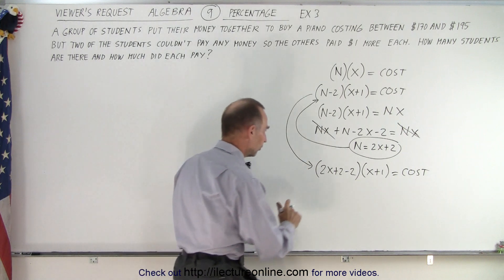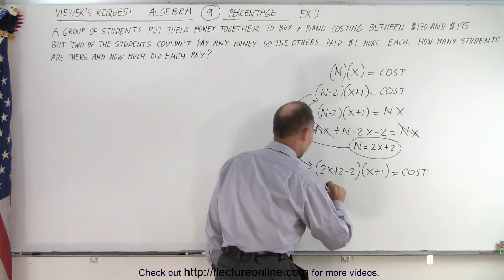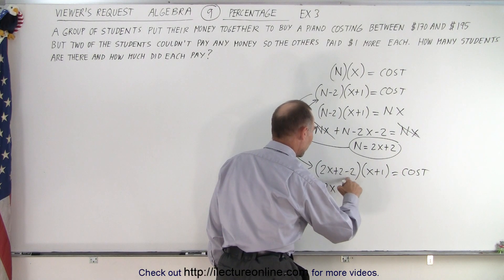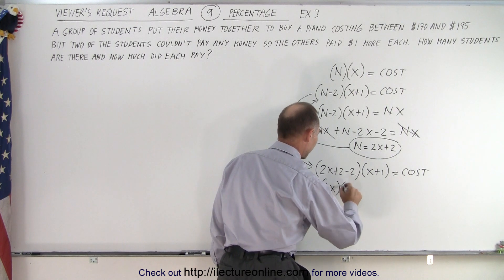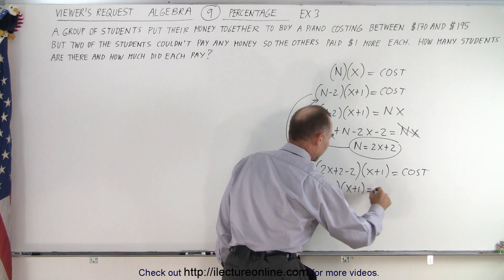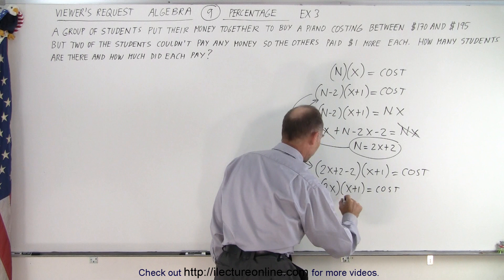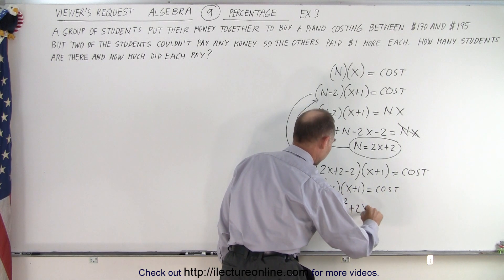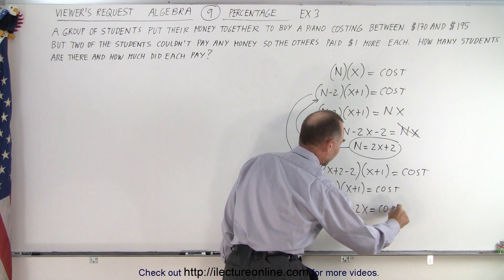And that should equal the cost of the piano. Alright, so let's do that. So we have 2x, 2 minus 2 is 0, multiplied times x + 1 that equals the cost of the piano. So we end up with 2x² + 2x equals the cost of the piano.